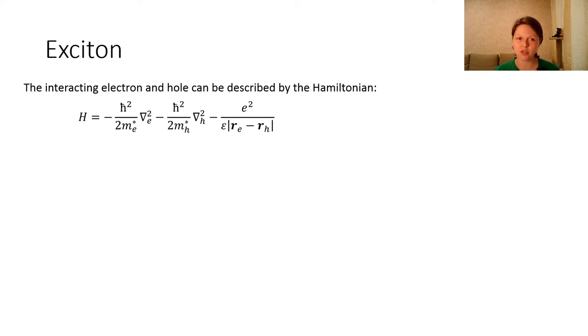The interacting electron and hole can be described by the Hamiltonian, which is very familiar to you because the same Hamiltonian describes the interacting electron and proton inside of the hydrogen atom.